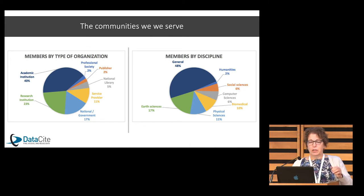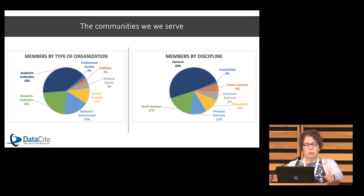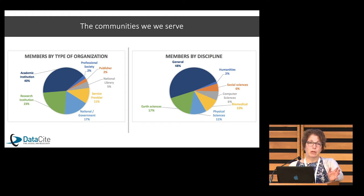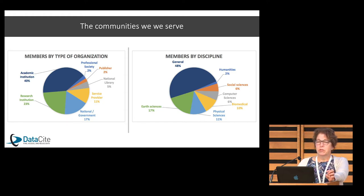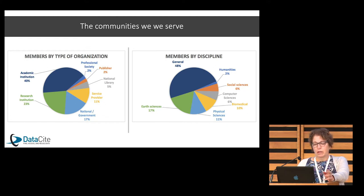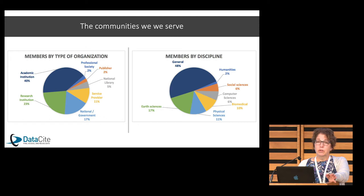So if you look at the communities we serve, thinking about the types of members that we serve, we work with academic institutions — that's the majority — but also research institutions like CERN, national government agencies like NOAA and NASA, and service providers, those who are providing platforms for hosting research data.